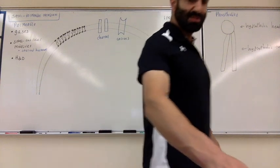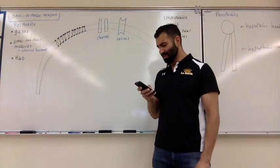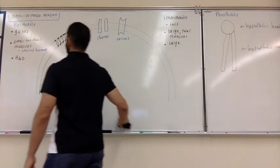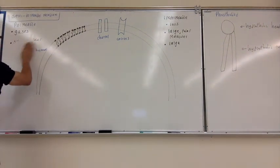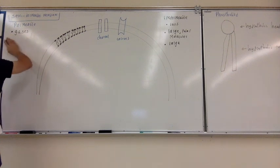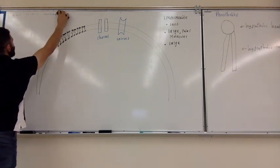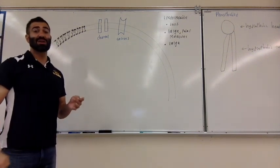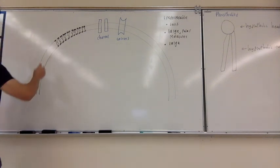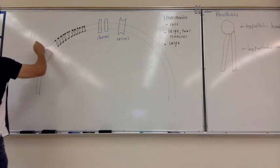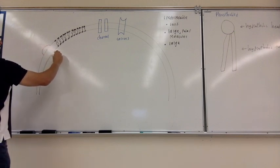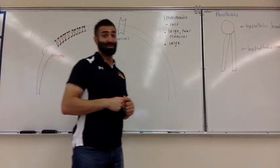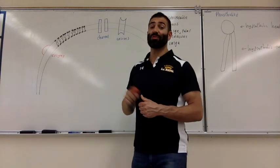The next thing on the cell surface is enzymes. There are actually types of proteins on the cell surface called enzymes. If you remember, enzymes catalyze chemical reactions, meaning they allow chemical reactions to happen faster. We'll go over specific examples as the semester progresses.